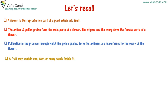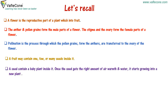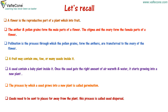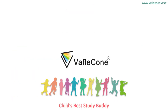A fruit may contain one, few, or many seeds inside it. A seed contains a baby plant inside it. Once the seed gets the right amount of air, warmth, and water, it starts growing into a new plant. The process by which a seed grows into a new plant is called germination. Seeds need to be sent to places far away from the plant — this process is called seed dispersal. Thank you.